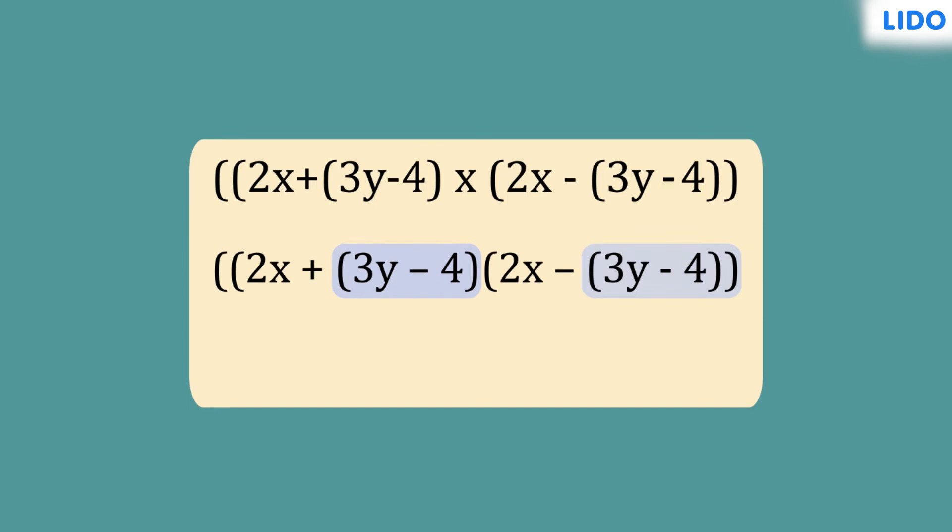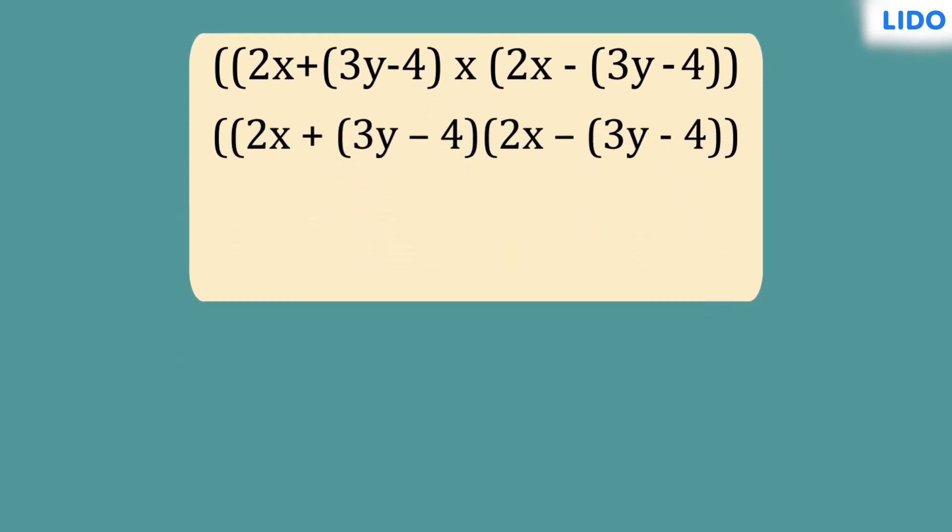Do you think now the expression maps to an identity? The first term in both brackets is 2x. Let's call it a. The second term in both brackets is 3y minus 4. Let's call it b. Therefore, this expression is of the type a plus b times a minus b, which equals a square minus b square.